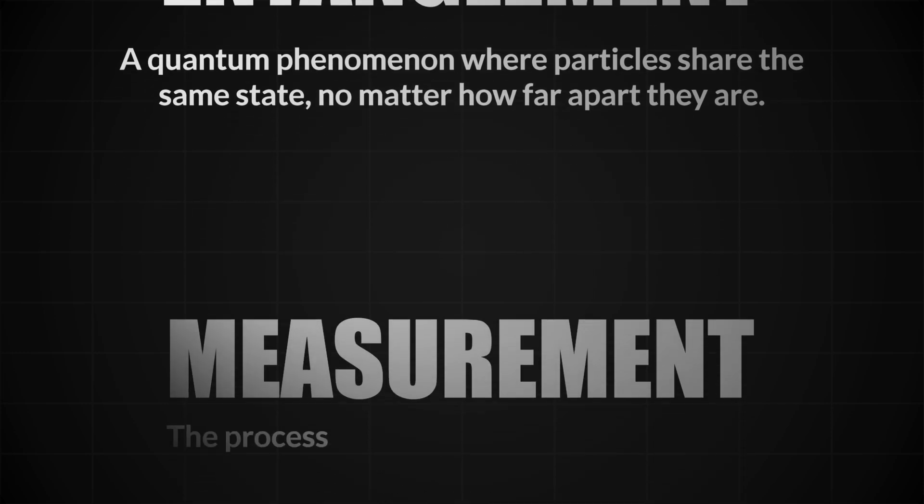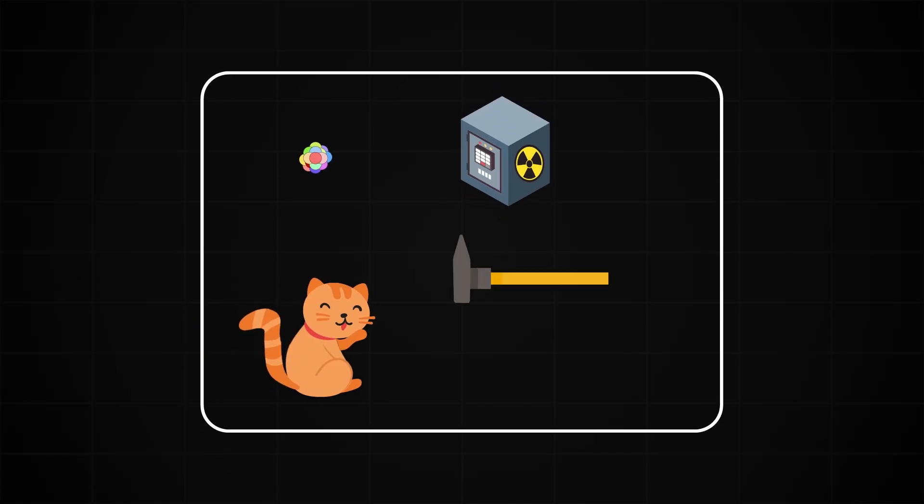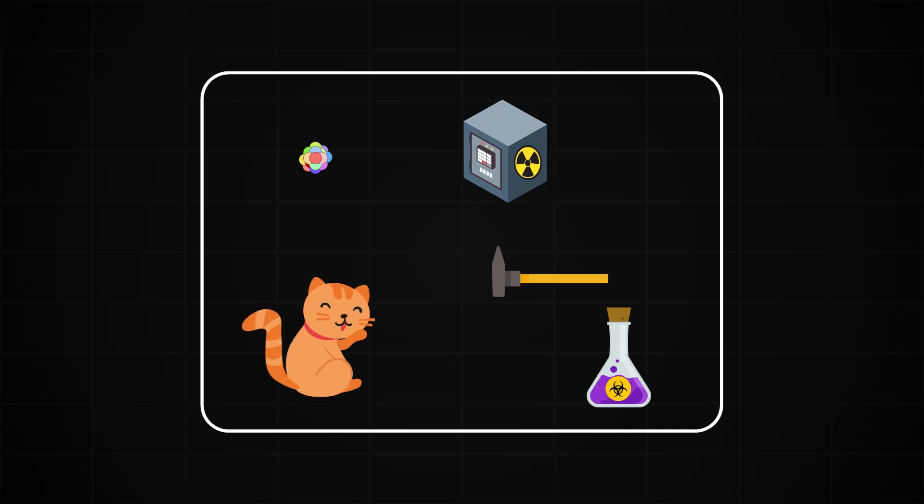When you really think about it, measurement is just another interaction between quantum systems. Electrons interacting with photons, photons interacting with detectors. So what does Schrödinger's cat really look like when we take quantum mechanics seriously?